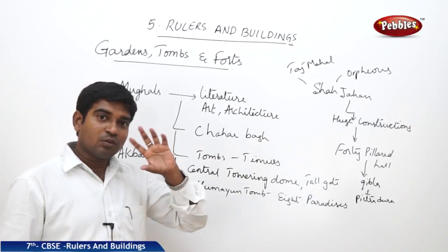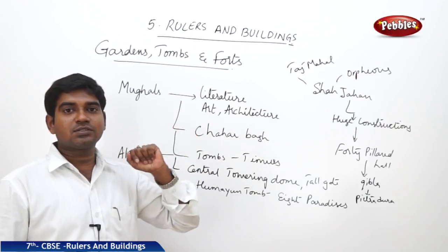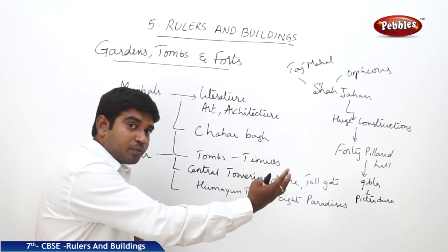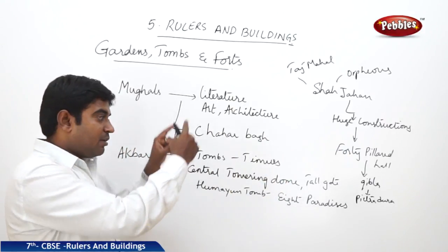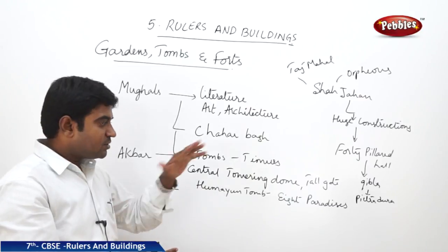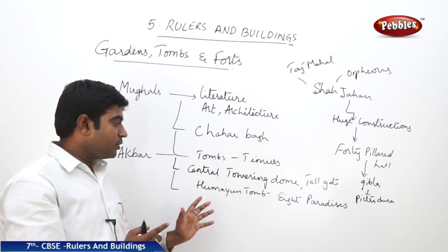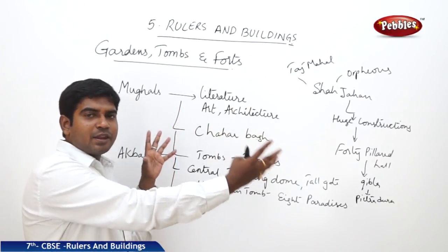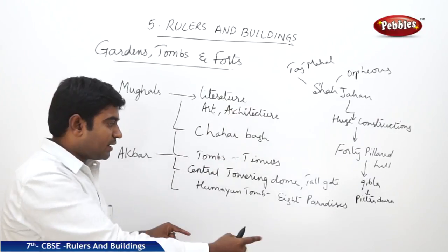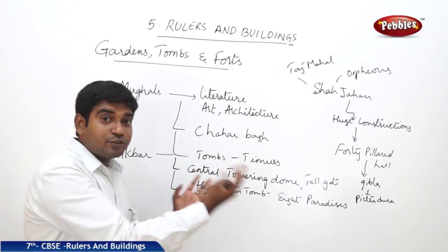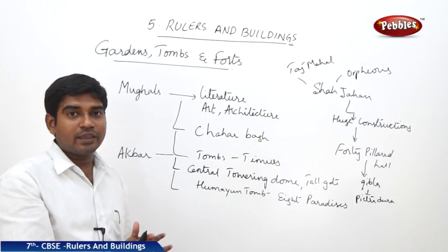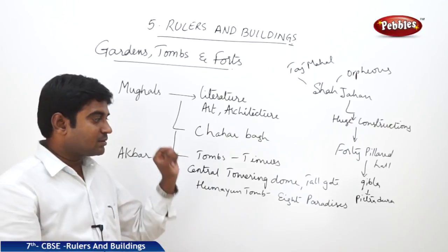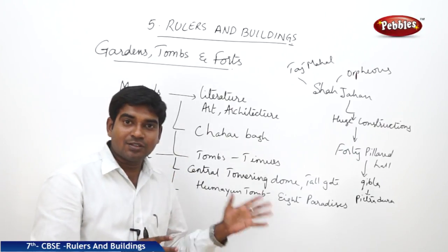The tombs adopted the Central Asian ancestral style of Timur — a central towering dome and a very tall gate at the entrance. This can be seen clearly at Humayun's tomb, where there is a very big central towering dome and a big tall gate. Associated with it are eight rooms, which is why it is called the 'eight paradises.' The tomb of Humayun is called the eight paradises.